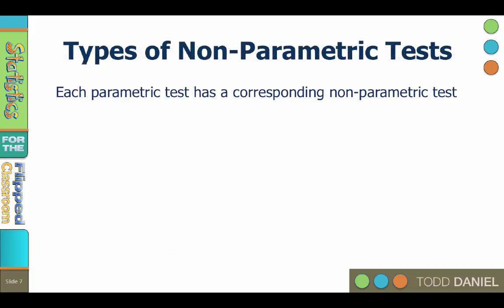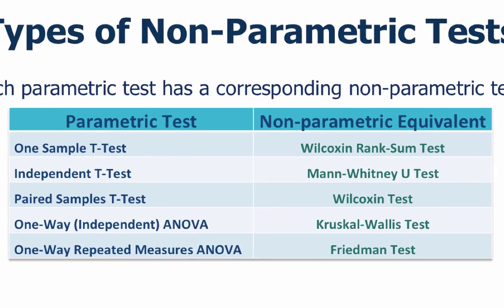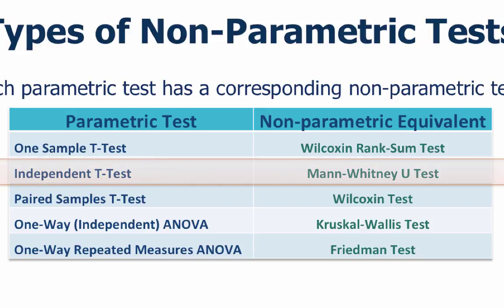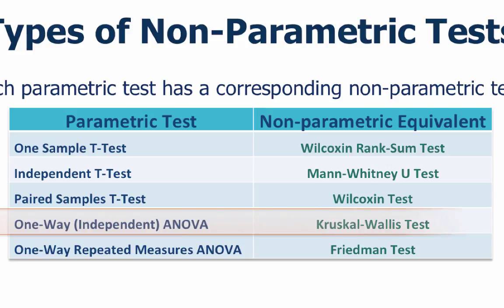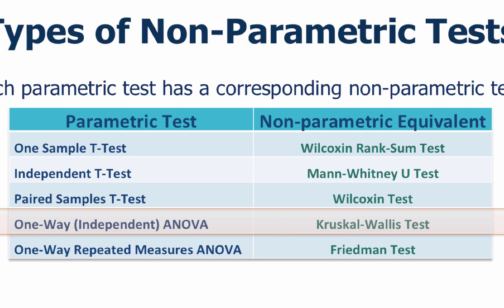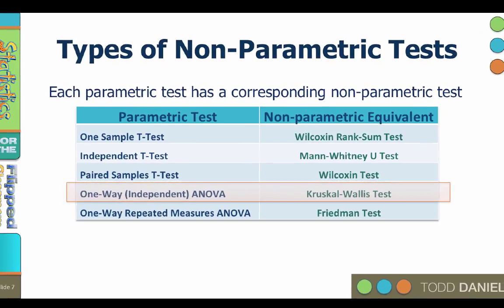As you get better with statistics, you will be using mostly parametric statistics. But you should keep some tools in your back pocket that you can use at times that parametric statistics fail. Each parametric test has a corresponding non-parametric test. Here you can see each parametric test and its corresponding non-parametric alternative. For example, if you plan to do an independent samples t-test but the data were highly skewed, you could use a Mann-Whitney U instead. If you wanted to do a one-way ANOVA but were looking for differences over five years of a program, you could do the Kruskal-Wallis test instead. Each of these non-parametric statistics can be conducted in SPSS.